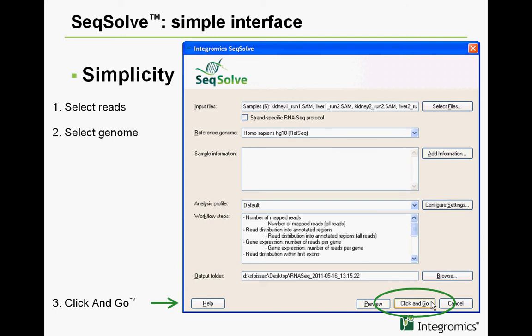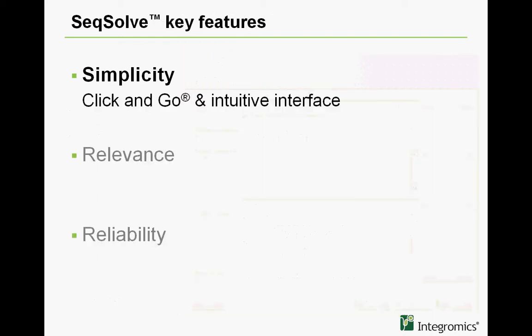SIGSOLVE features the click-and-go system, which triggers the automatic processing of your data. With click-and-go, no need to be a computational expert. The full RNA-seq workflow is performed and all the results are automatically generated. This is how simple it is to use SIGSOLVE.